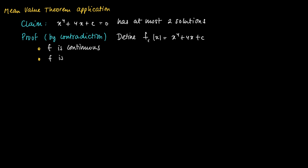Now we use a proof by contradiction. Assume that there are more than two solutions. If we have more than two solutions, this means that we should have at least three solutions.